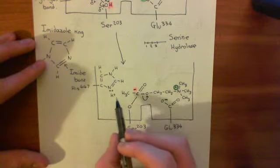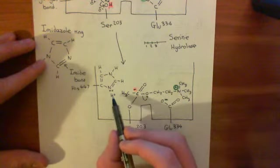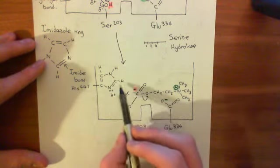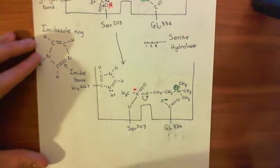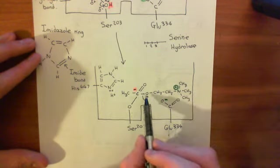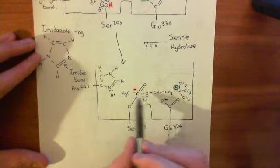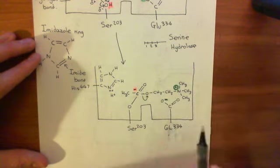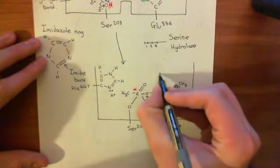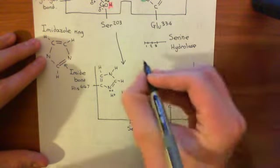And what it will then do is it will nick this proton from the imidazole ring of the histidine-447, and it will then bind to that to neutralise the positive and negative charge. And what molecule will you overall get coming out of the enzyme now?